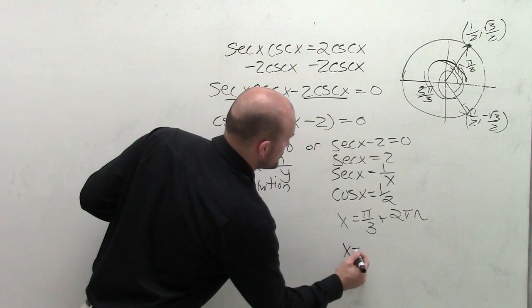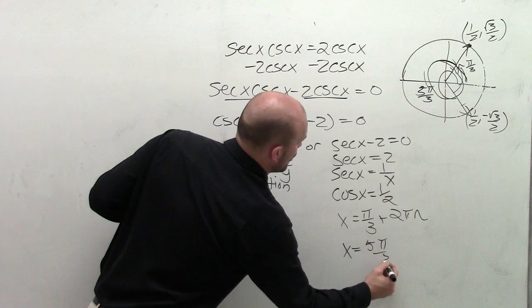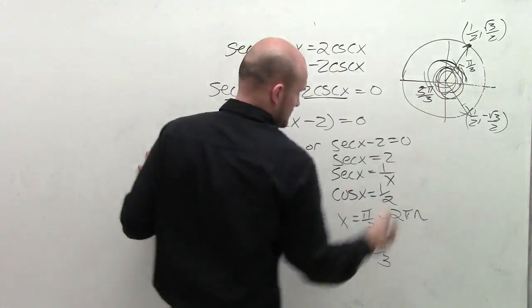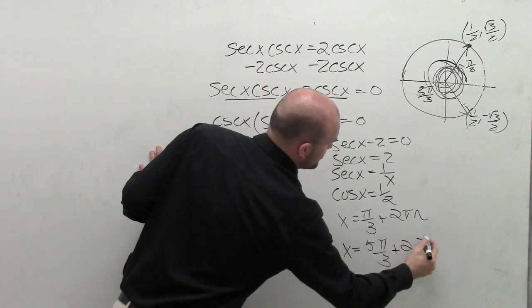Then I can say my other solution, x equals 5 pi over 3. So when I get to this angle, and then for all the coterminal angles, I'm going to add 2 pi n.